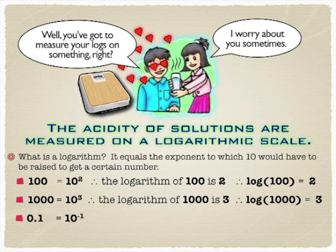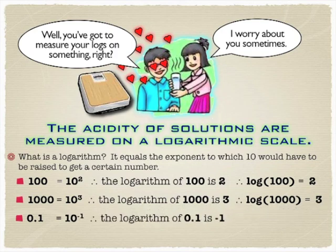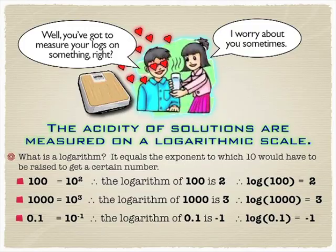If you had a thousand, then the log of a thousand would be 3, because you'd have to take 10 to the third power, 10 times 10 times 10. And it even works for tiny numbers. To get 0.1, you'd have to have 10 to the minus 1, and so then you'd end up with the log of 0.1 being negative one.